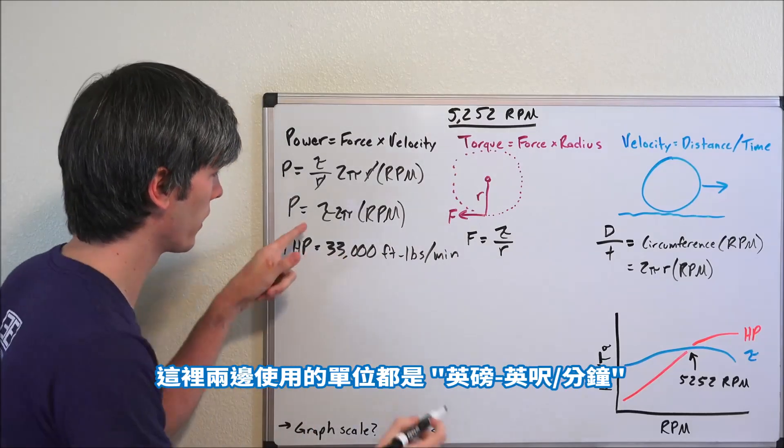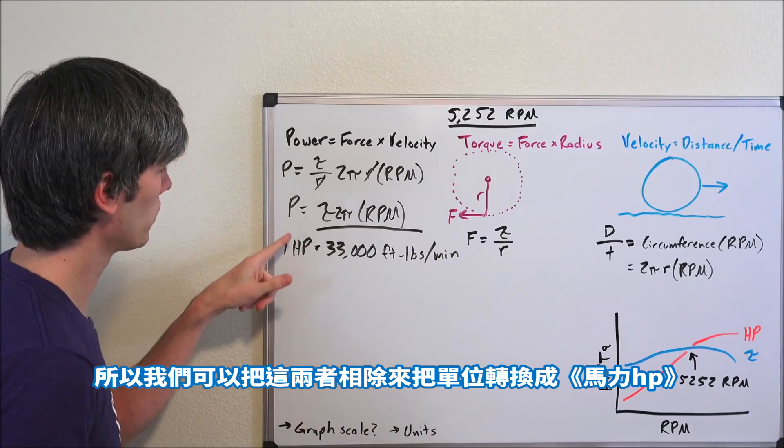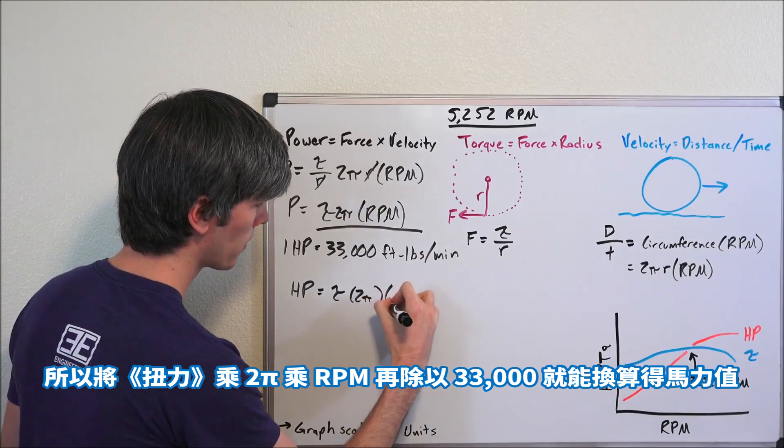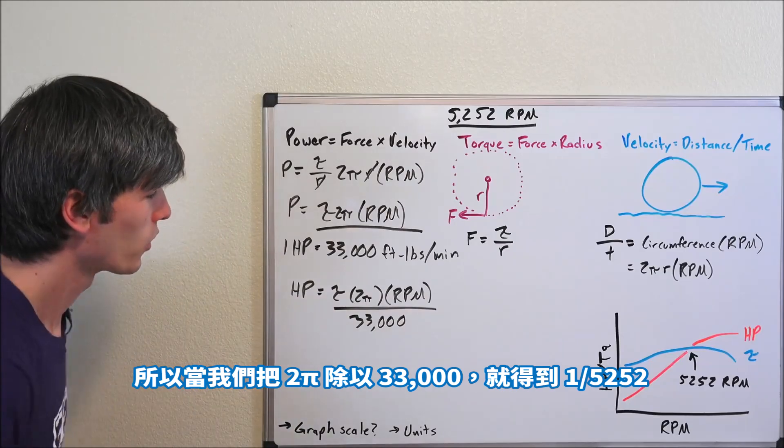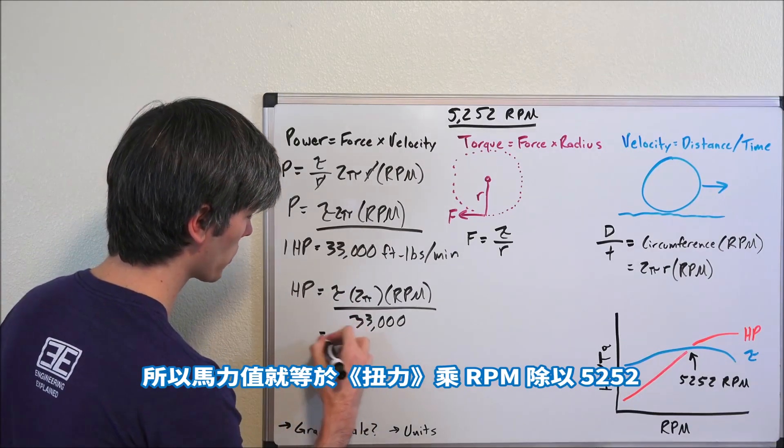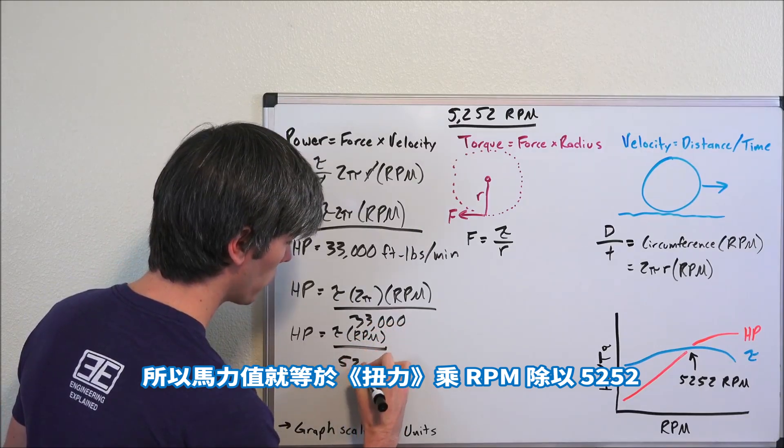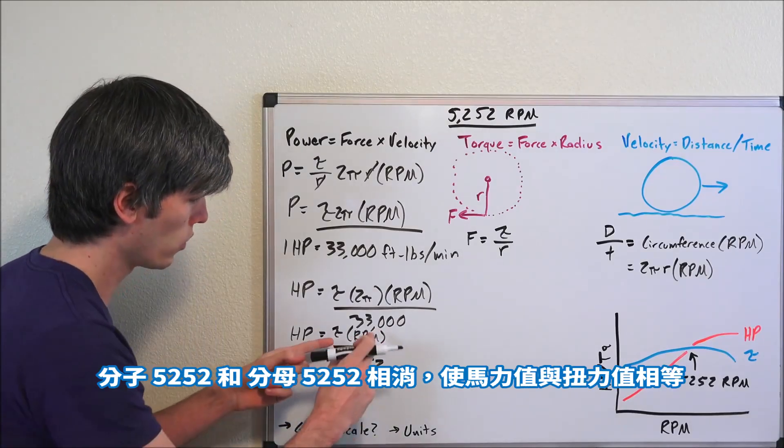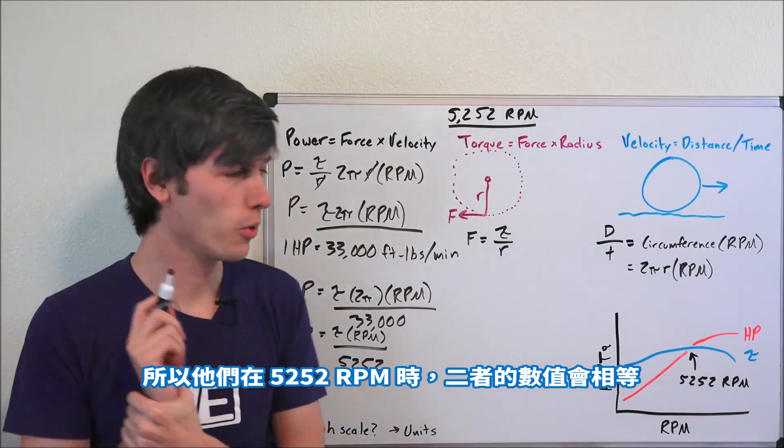Now what's interesting about this is this is in units of foot-pounds per minute, this is in units of pound-feet per minute. So we can divide the two and that will give us units of horsepower. So horsepower is equal to torque times 2π times RPM divided by 33,000. If we take 2π over 33,000, we can simplify that fraction to 1 over 5,252. So horsepower now equals torque times RPM divided by 5,252. So now you can see where this number comes from. If you put in an RPM of 5,252, you get 5,252 over 5,252 - those cancel out - horsepower equals torque. So they are equal to each other at 5,252 RPM.